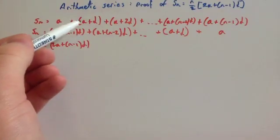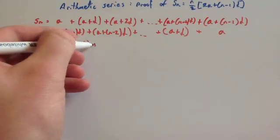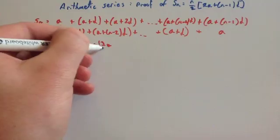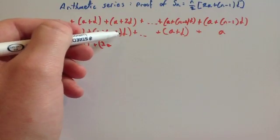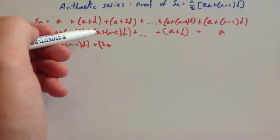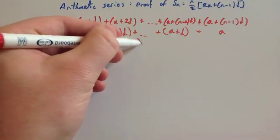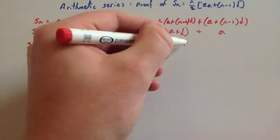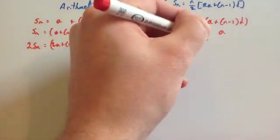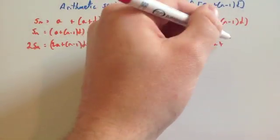The next term, well, a plus a is 2a. And again, n minus 2 lots of d plus the number d would be one more lot of d, so it would be plus n minus 1d, plus all the way up to the last term, which would be 2a plus n minus 1d.